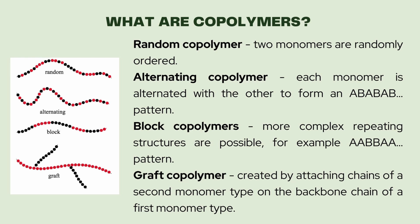In block copolymers, more complex repeating structures like an ABBAA pattern are possible. Graft copolymers are created by attaching chains of a second monomer type onto the backbone chain of the first monomer type.